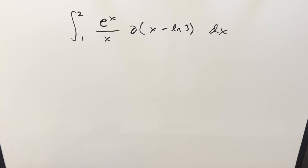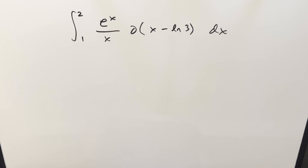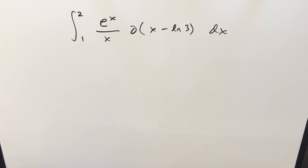We have here today the integral from 1 to 2 of e to the x over x, times the Dirac delta function of x minus ln 3, dx. It's interesting. There are a few things we're not used to dealing with, and yet this integral is not going to be too bad.